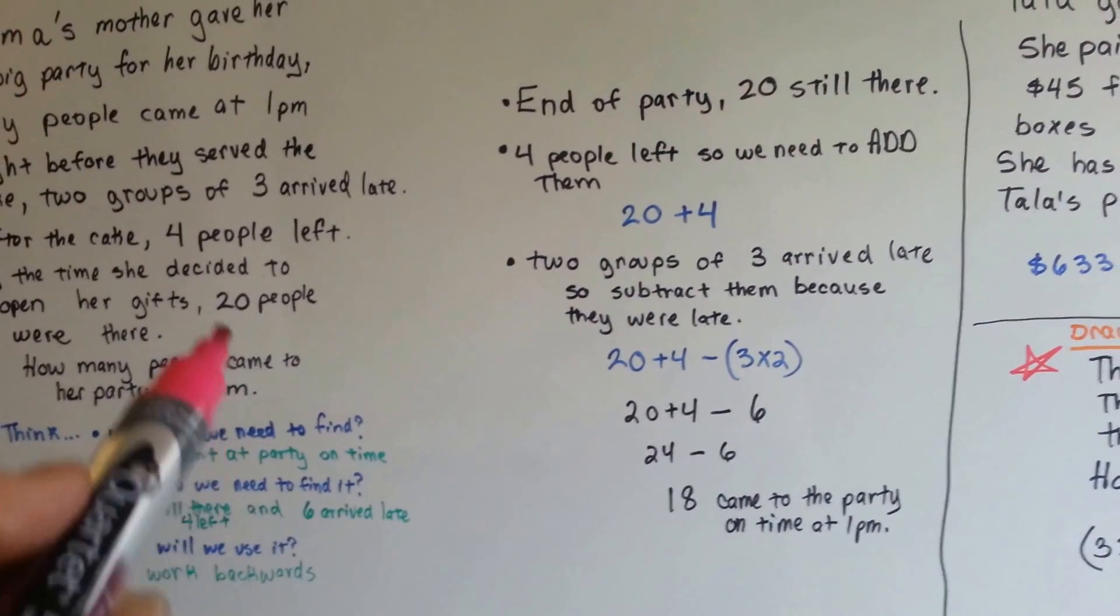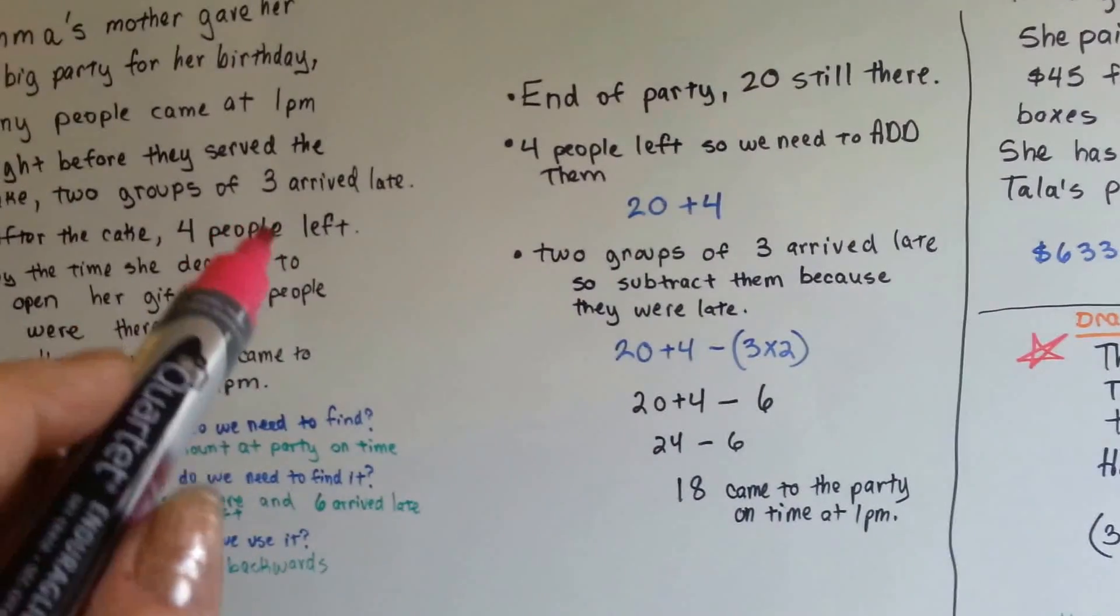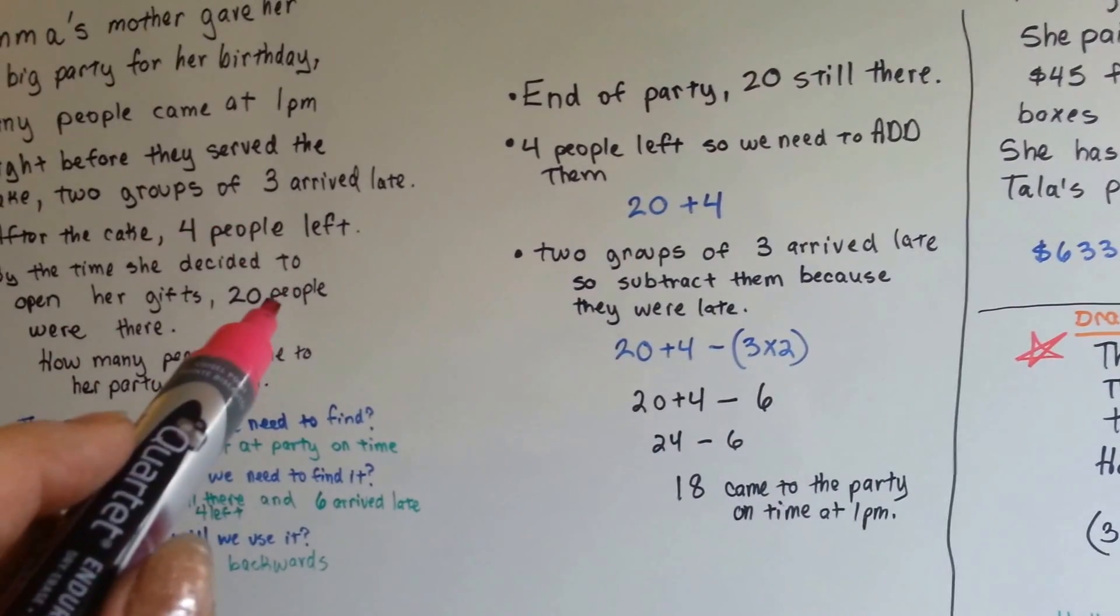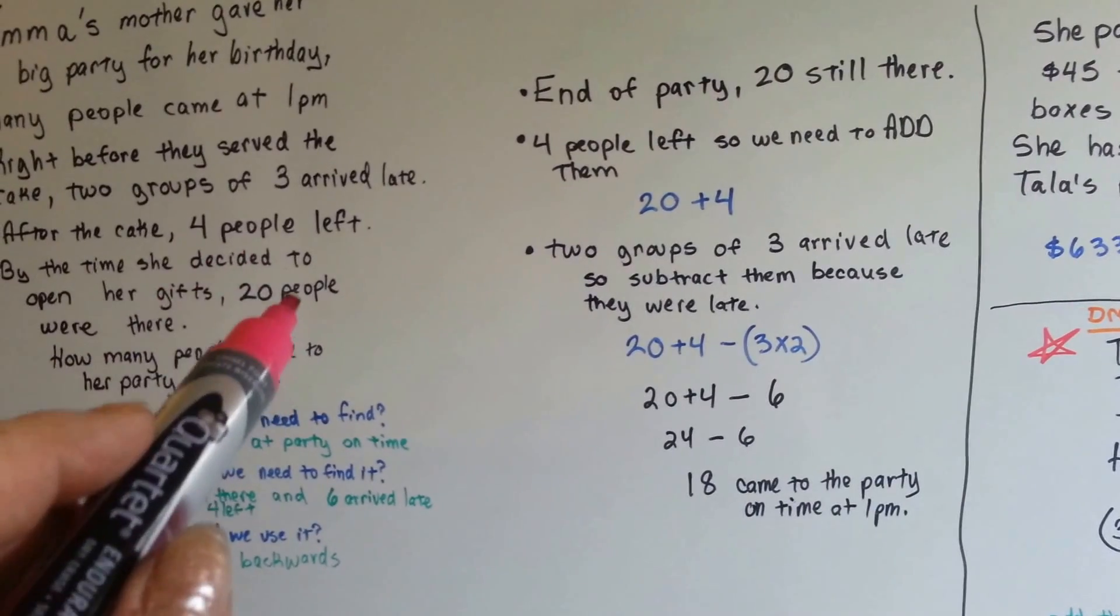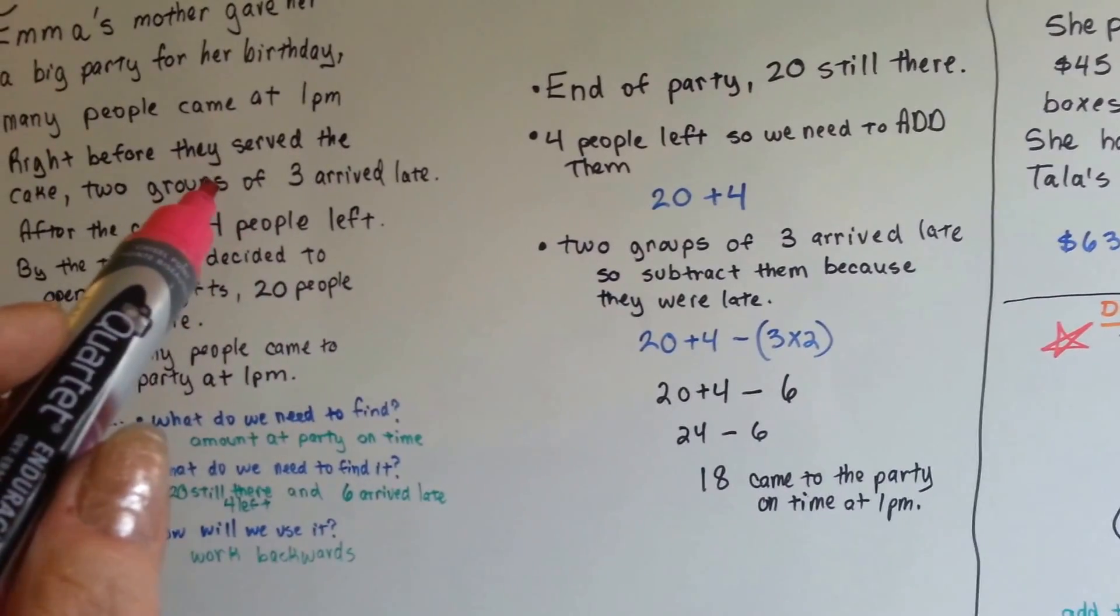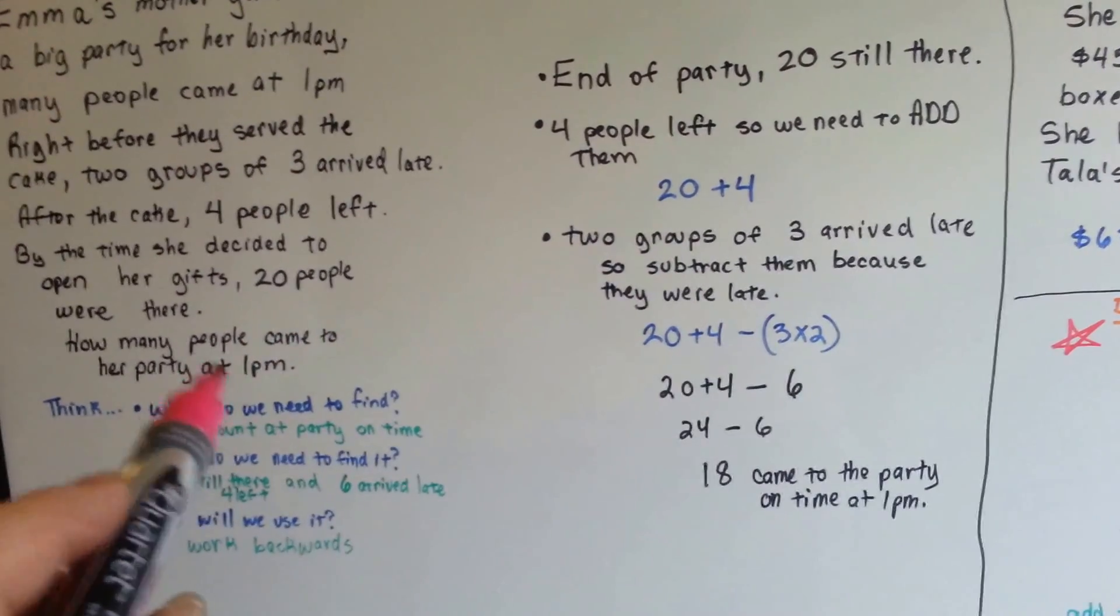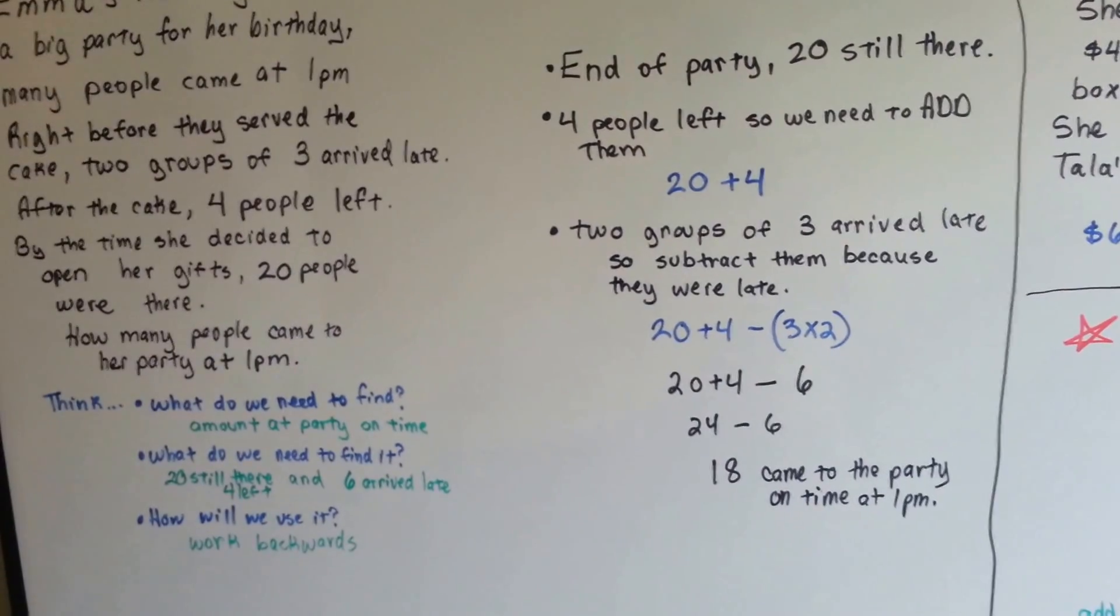See how we did that? So we started with the 20, and then we started working backwards. Because people left, we had to add them because that means they were at the party. And then the people that were late, we had to take them off because they weren't on time, and we're trying to figure out who was on time. See? So working backwards can help.